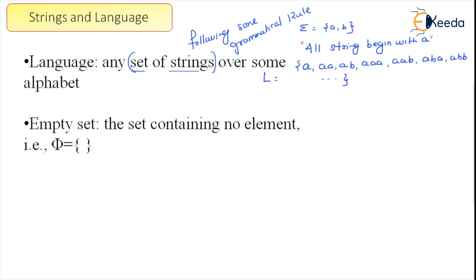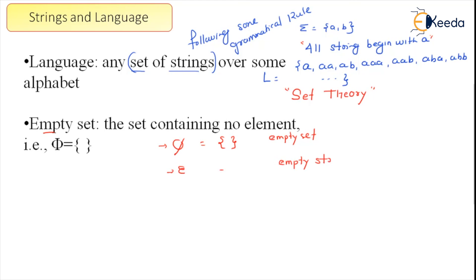A language is a set of strings, and that's why set theory is very important for understanding automata theory. The empty set, denoted by phi, consists of no elements and has cardinality zero. It is important not to confuse phi with epsilon — phi is an empty set, while epsilon is a string, specifically an empty string. They are different data types: one is a set, the other is a string. That's all for this section, thank you.